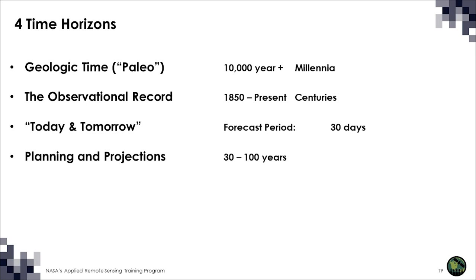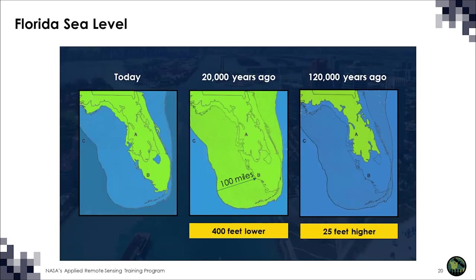It's important to think about 30 to 100 years because that's the design life of buildings and infrastructure. All four time horizons are relevant: geologic time gives us understanding of what could happen in the future; the observational record going back roughly 170 years gives us realistic, accurate measurements which have gotten better; and we use that information to project what's going to happen during the next storm event or during the lifespan of a building — what do we need to design and engineer for — which gets us into the planning and projection horizon.